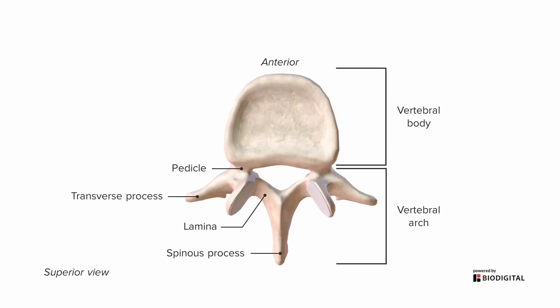You can see there's a hole or foramen that exists between the vertebral body and vertebral arch — the vertebral foramen, or vertebral hole. That's where our spinal cord is going to be housed and protected.